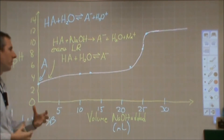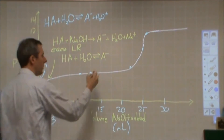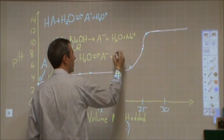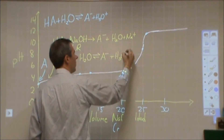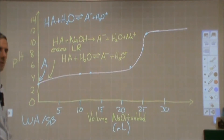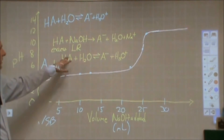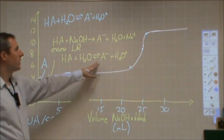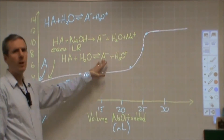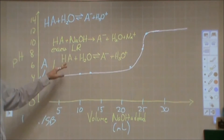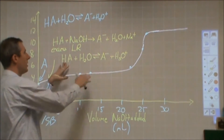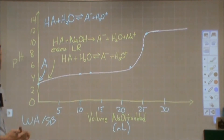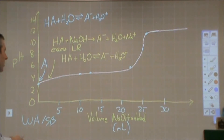Those three things establish an equilibrium that allows me to figure out what my H₃O⁺ concentration is, given the starting amounts of HA and A⁻. There are two ways to calculate that: you can do a simple ICE chart and plug in the starting concentrations, or you can use the Henderson-Hasselbalch equation.